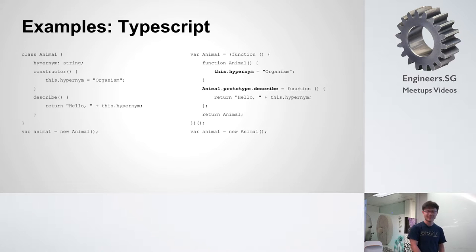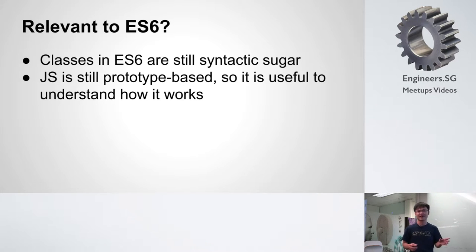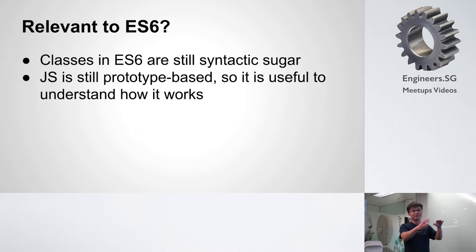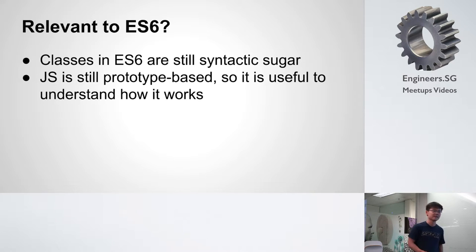When I was researching this, a friend asked: is this even useful? Because ES6 is coming up, and in ES6 you have a proper way of defining classes — you can write "class animal" or "class vehicle" with a constructor function. But I'd say it's still useful to understand what's happening underneath, because even in ES6, all your classes are still just syntactic sugar. Under the hood it converts back to what we've seen, and if you know that, you can write more effective JavaScript because the language becomes much more expressive.